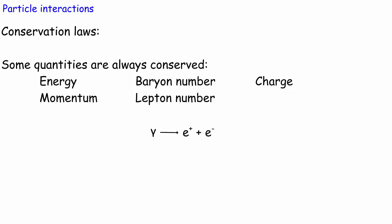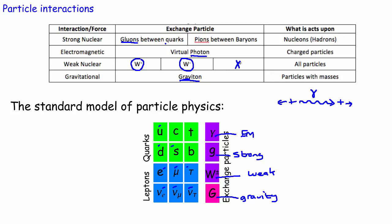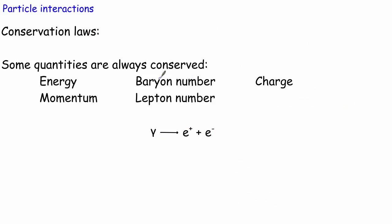What we want to do is look at which interactions can actually take place. To do that, we need to consider what things are conserved, because in all four interactions certain things must be conserved. Energy is always conserved — we know that from GCSE. Momentum is also always conserved — we've just used that in our analogy. Three other things also have to be conserved in any interaction: charge, lepton number, and baryon number.